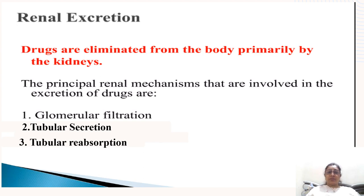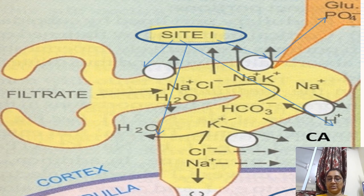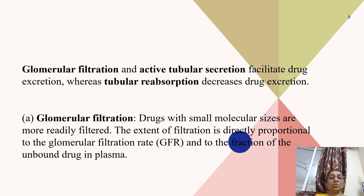Renal excretion: drugs are eliminated from the body primarily by the kidney. The principal renal mechanisms involved in excretion of drugs are glomerular filtration, tubular secretion, and tubular reabsorption. Each drug present in the plasma is filtered through glomerular filtration and enters into the tubule. Glomerular filtration and active tubular secretion facilitate drug excretion, whereas tubular reabsorption decreases drug excretion, retaining the drug in the body.